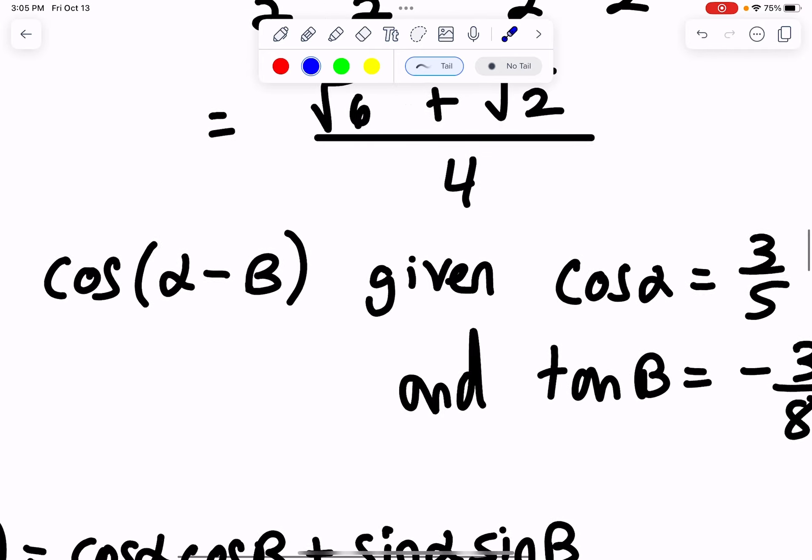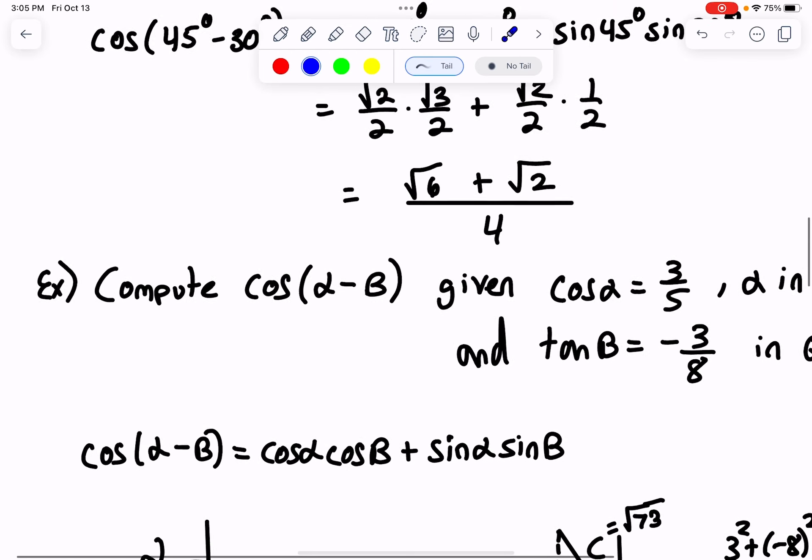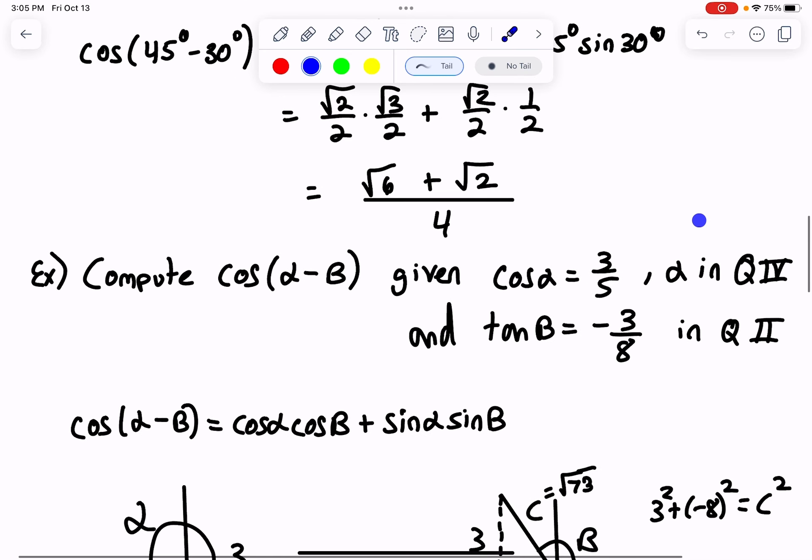So we want to find cosine of alpha minus beta. First, we use our identity. To compute cosine of alpha minus beta, I don't know alpha or beta, but I do have some information about them. To compute their difference, I need to know cosine alpha, cosine beta, sine alpha, and sine beta.